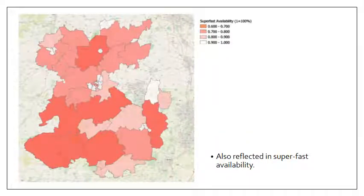If we look at how superfast availability translates on the ground, you can see here the areas that have less access to superfast broadband — that is, the percentage of lines capable of receiving download speeds of at least 30 megabits per second. Whether consumers actually subscribe to that is another area of discussion, but this shows how it maps out in Shropshire in terms of superfast broadband availability.